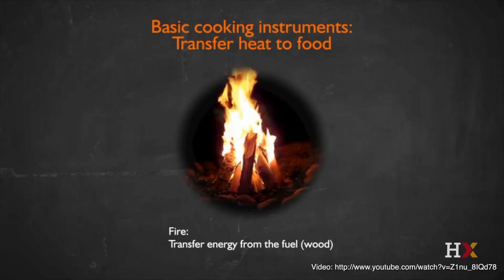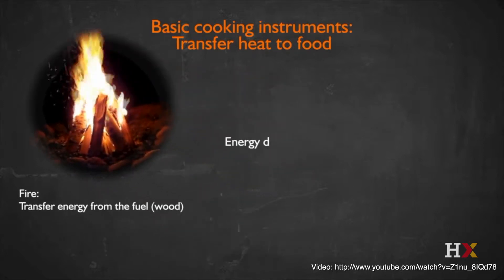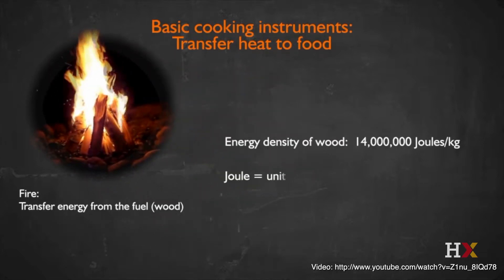Let's think about the process of transferring heat to food from fuel. It turns out that wood or any fuel has what we call an energy density. This is an energy per unit mass — the way it's typically reported — of how much energy can be liberated by burning the fuel. In the case of wood, the energy density is 14 megajoules per kilogram.